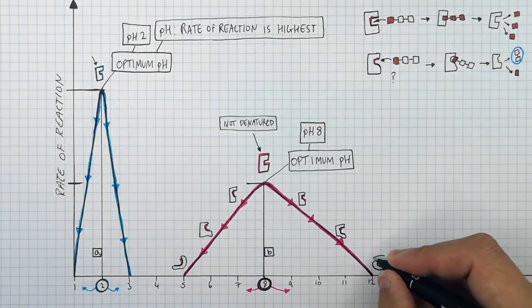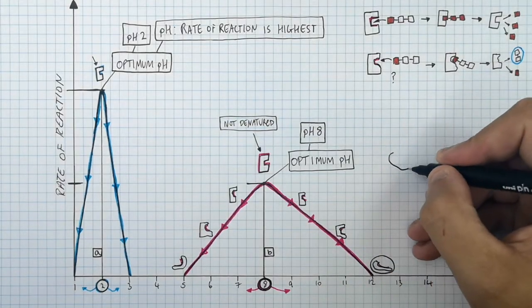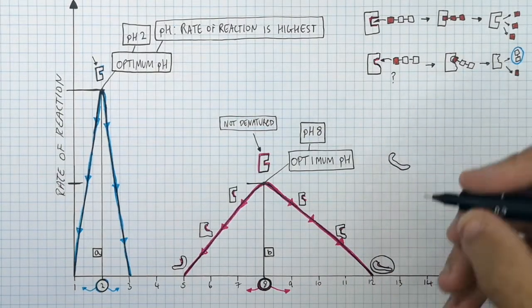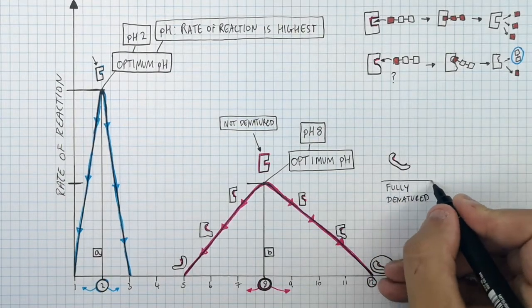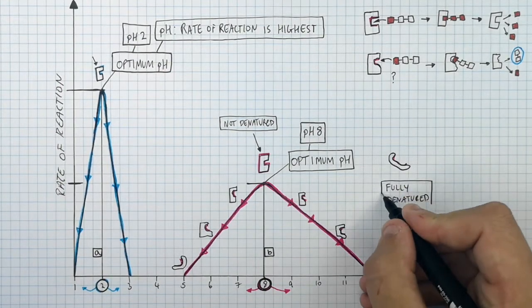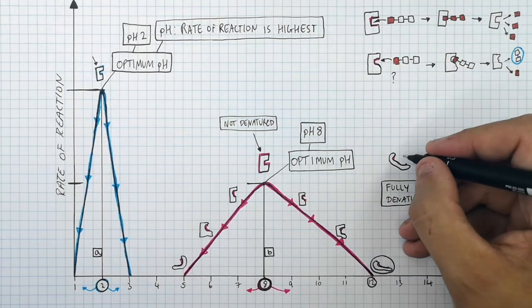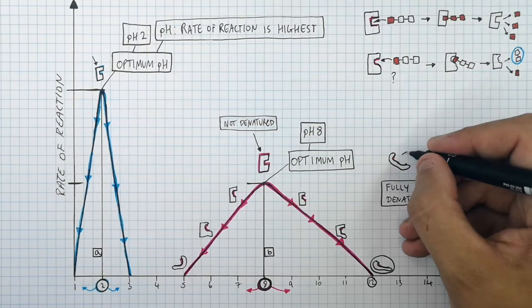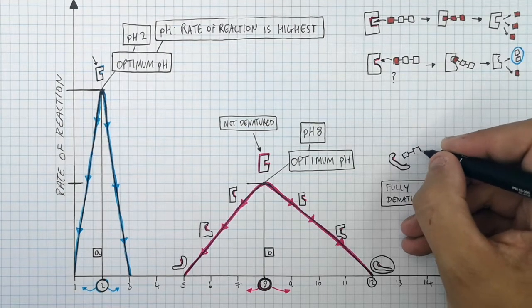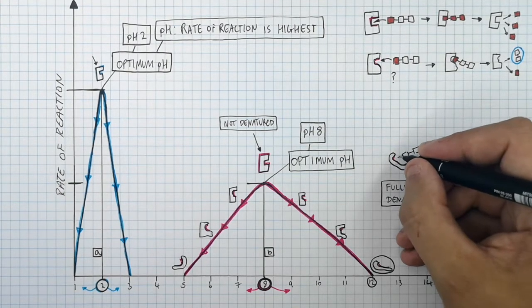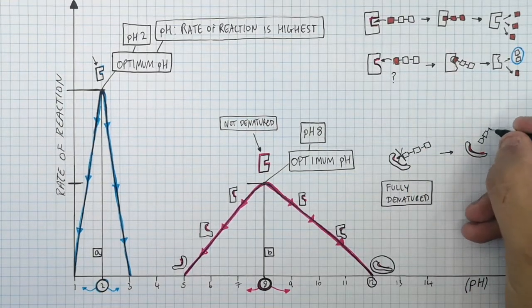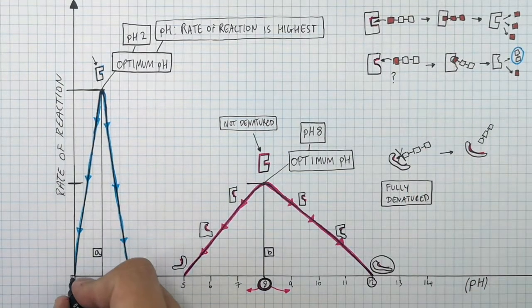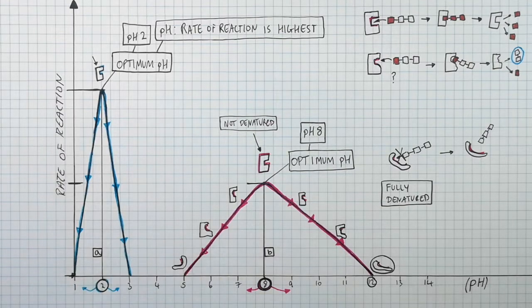If the enzyme is fully denatured, as we can see here at pH12, the enzyme is fully denatured, which means the active site of the enzyme has fully changed shape. Therefore, the substrate cannot bind the enzyme's active site at all, and no product will be produced, so the rate of reaction will be zero.